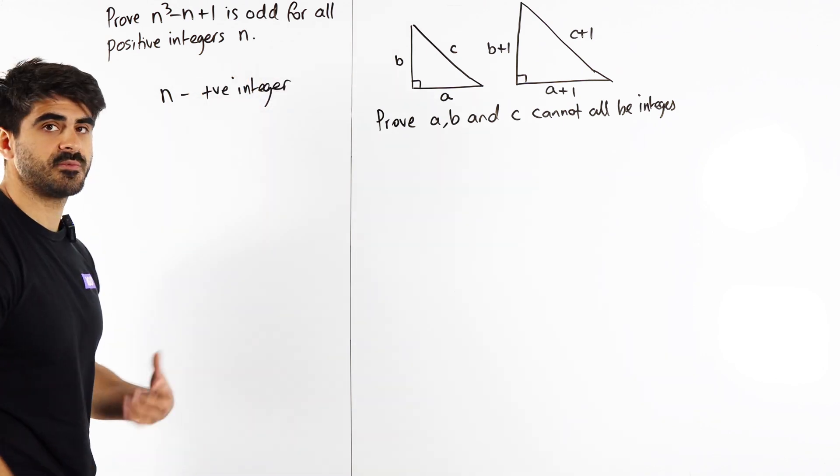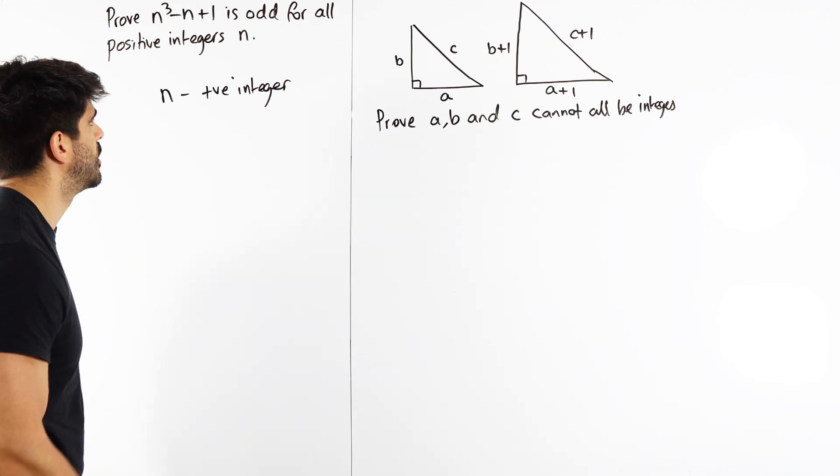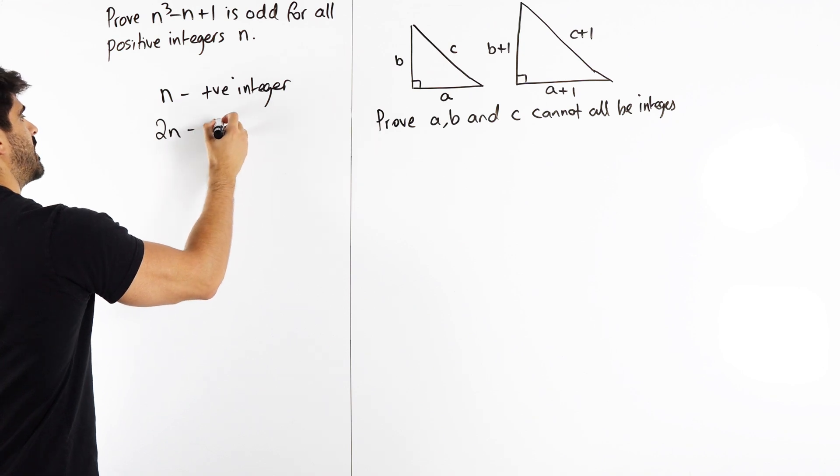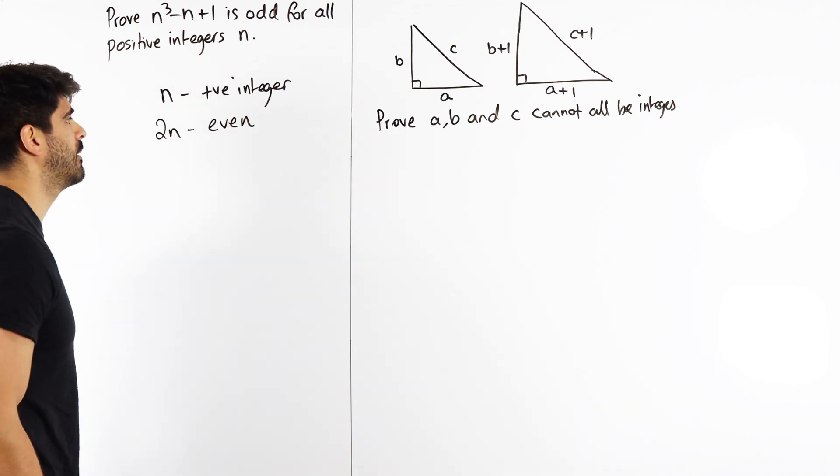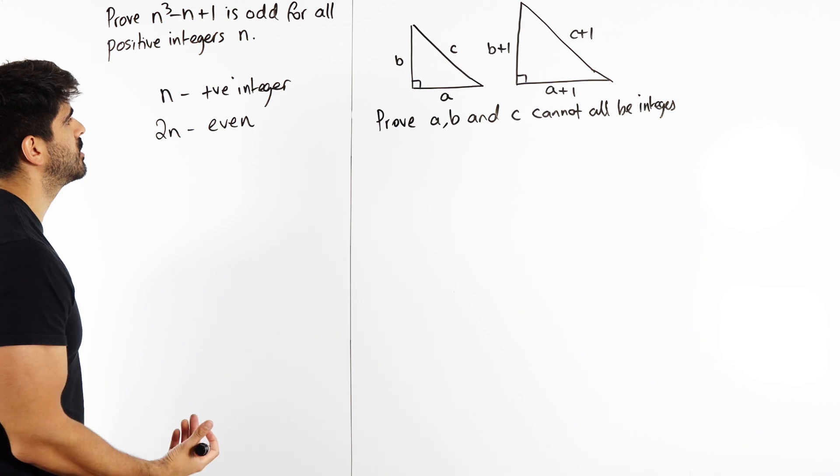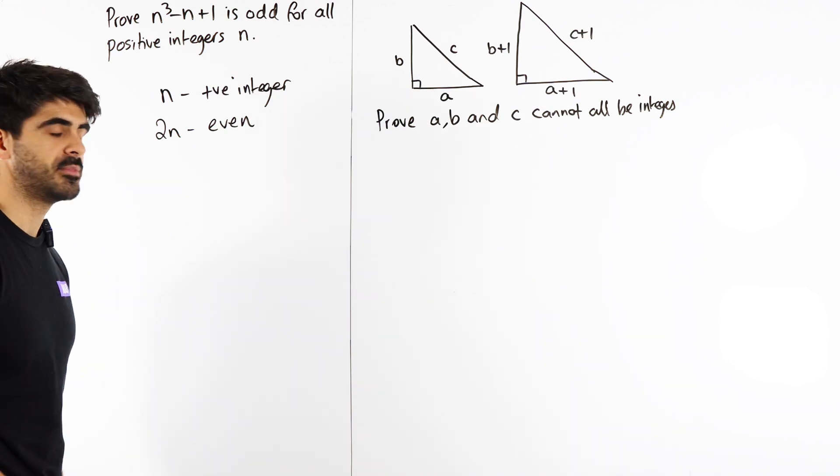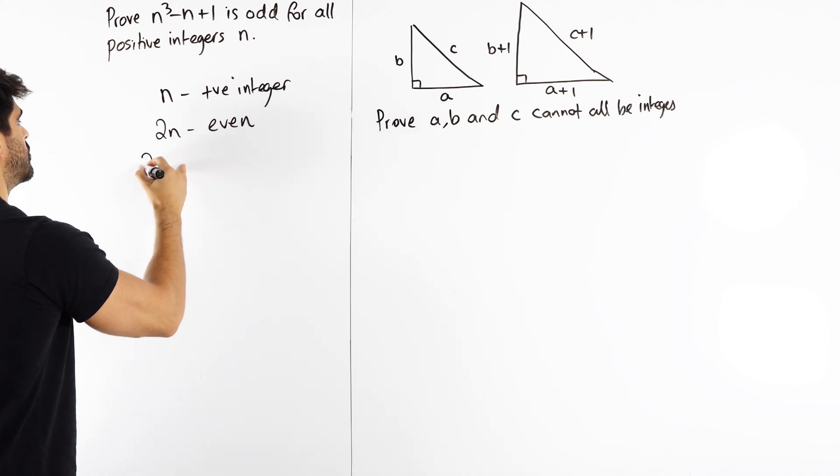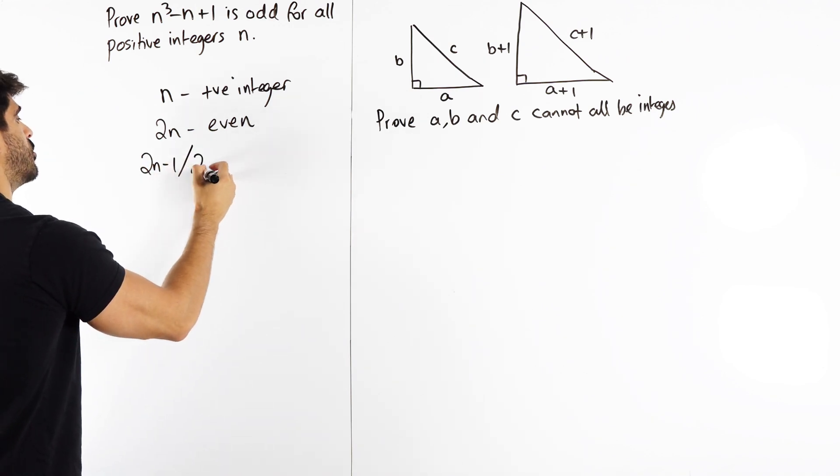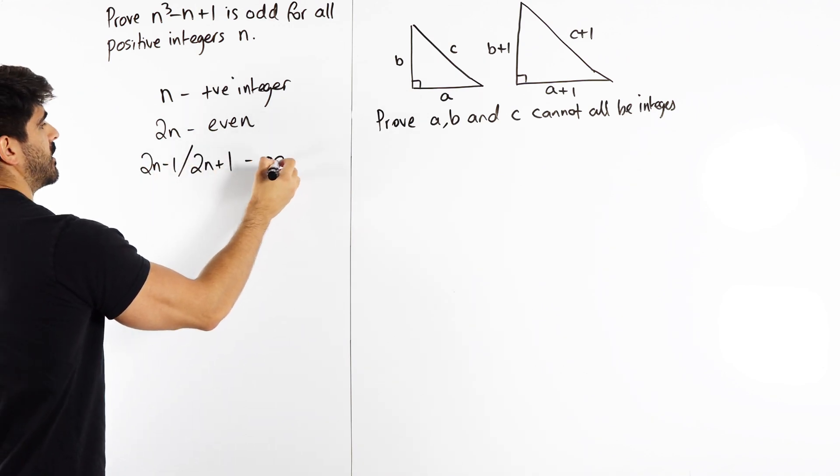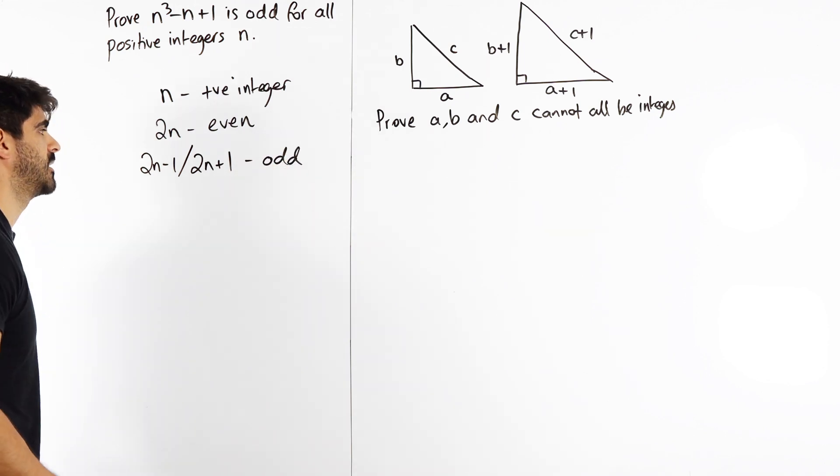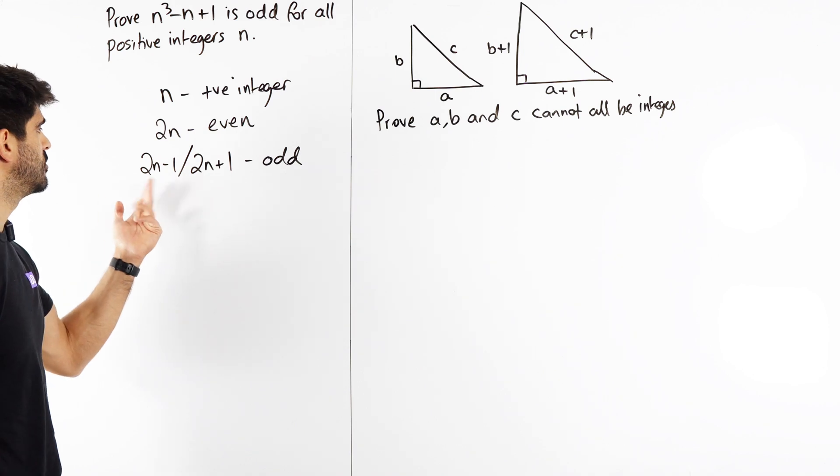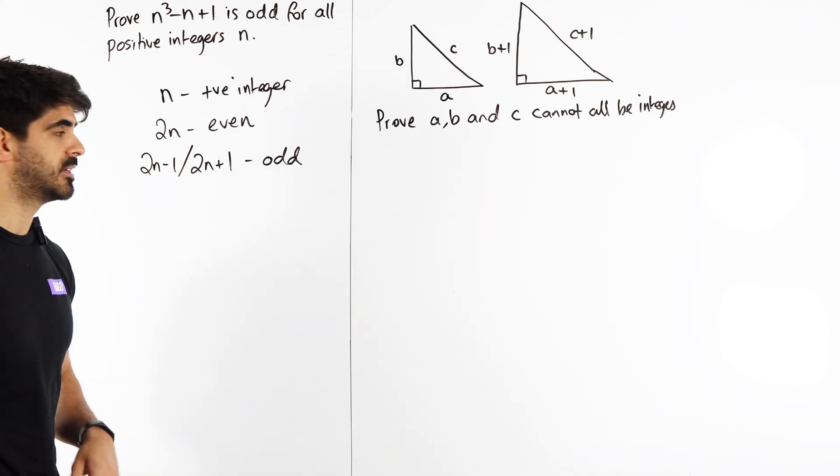The next thing we need to define is even numbers. All even numbers are multiples of 2, so 2n would be the even numbers. How about the odd numbers then? Well, odd numbers are in between the even numbers. They're one more or one less than the evens. So you can use either 2n - 1 or 2n + 1 to define your odd numbers. It depends on the context of the question. Usually I like to use 2n - 1, but it's up to you.